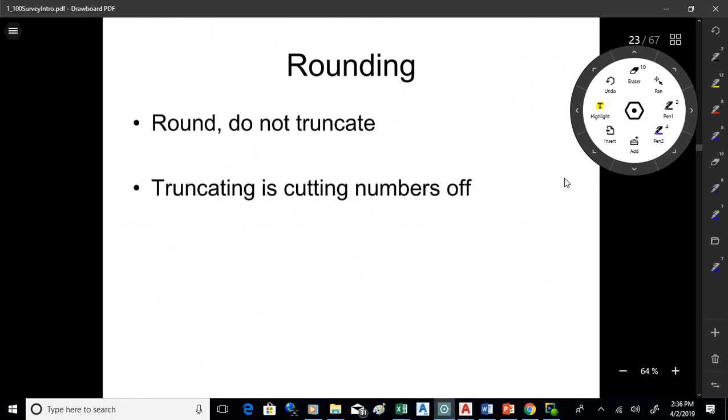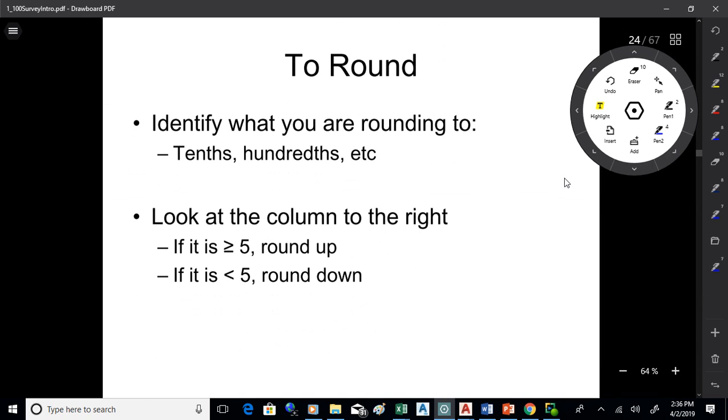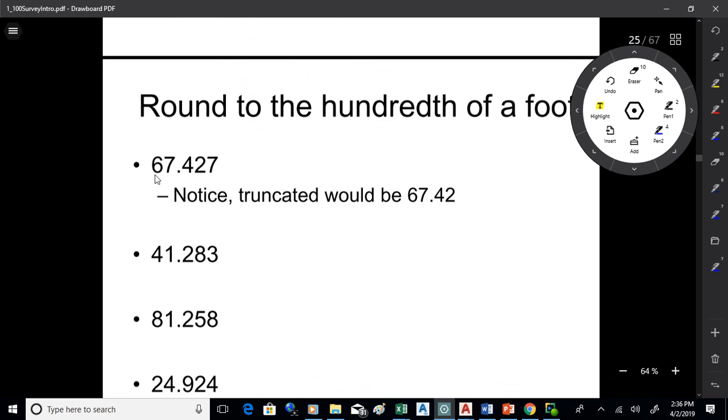We work with numbers. Surveyors measure stuff. We round stuff. We don't truncate. Truncate means to cut things off. We don't do that. We round. So to round, we identify what we're rounding to. Tenths, hundredths, whatever. And then we look at the column to the right of that. If that number is five or bigger, we round up. Less than five, we round down.